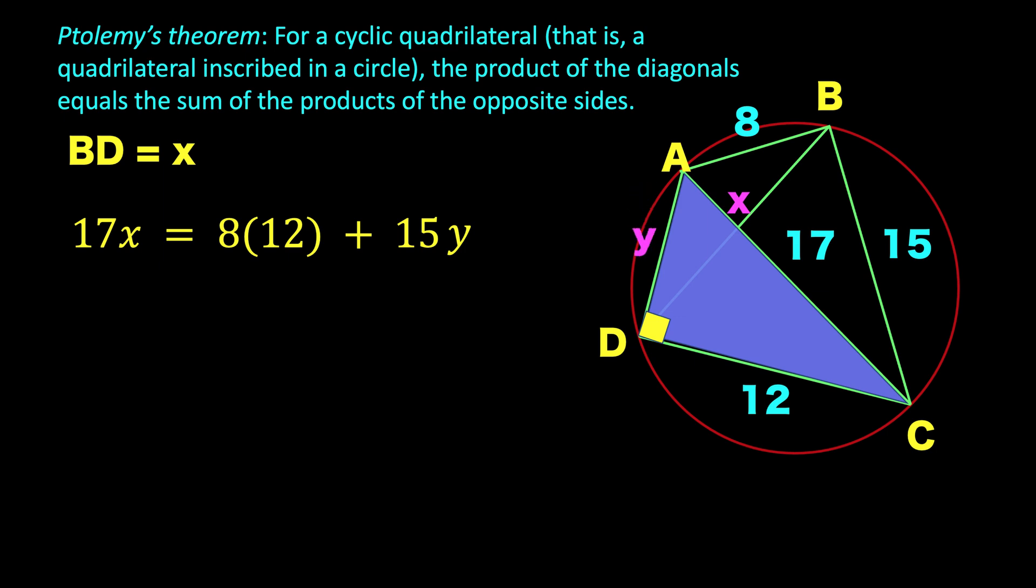So, using the Pythagorean formula, we can now form this equation. Side AD with the length of Y units is equal to the square root of the difference of the squares of the hypotenuse and one of the other legs. So, we have the square root of 17 squared minus 12 squared. And solving for Y, we have Y equals square root of 145.